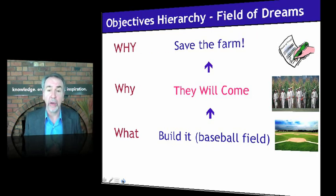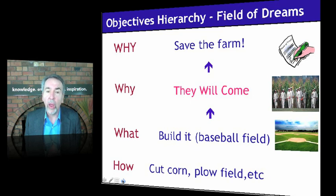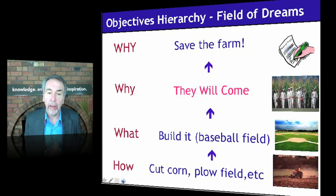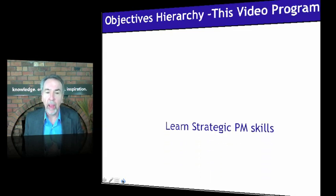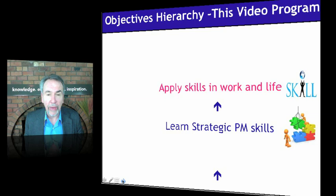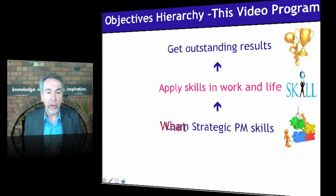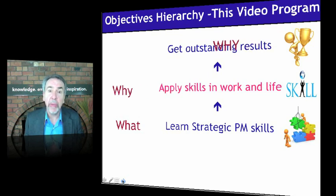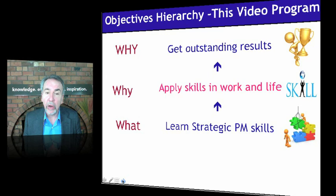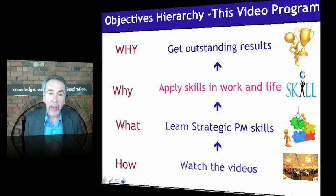So let's put some user-friendly words on this. The what is what we can make happen: build the baseball field. Why? So that they — baseball players and fans — will come. Why do we want that? So we can save the farm. Now we have three levels of objectives; let's call them objectives to get more precise. You can then ask 'how?' and get to activities: cut the corn, plow the field, and so forth. What I see in practice is people getting a simplistic goal and jumping to the activities — the how — way too early. If-then logic connects a hierarchy of objectives.